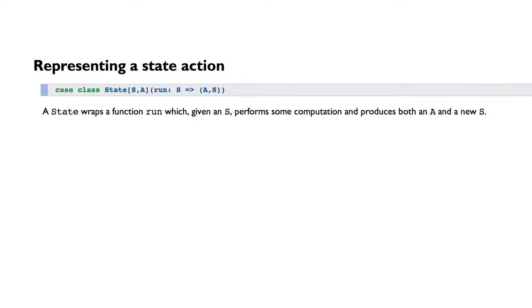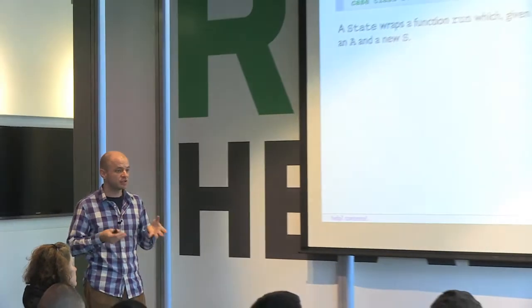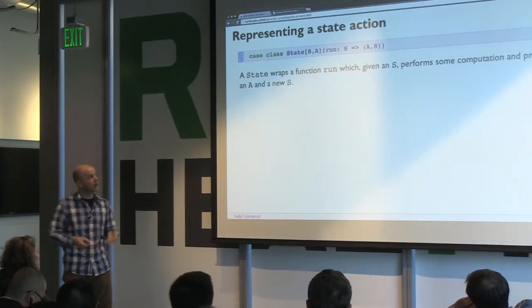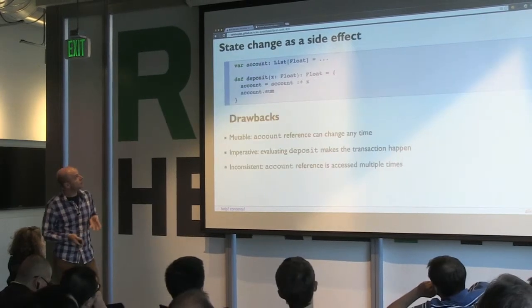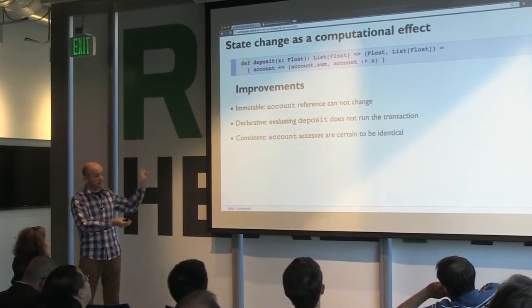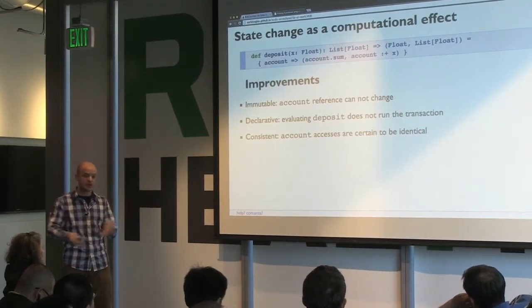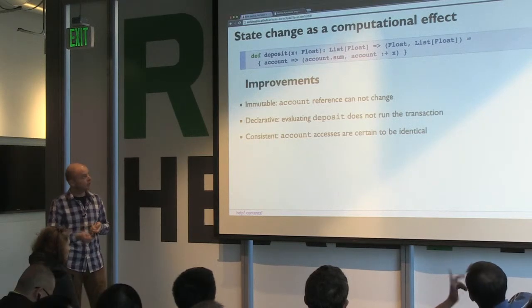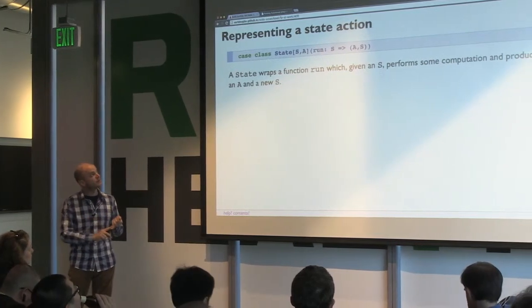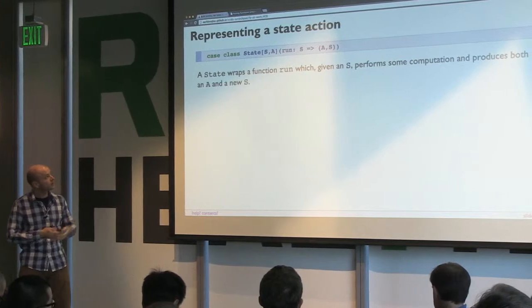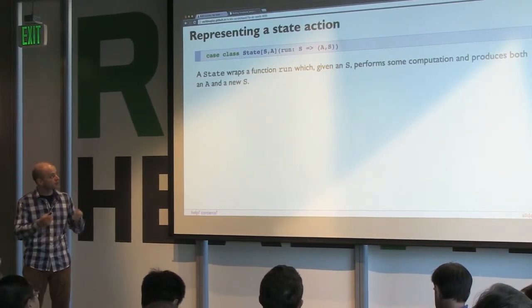I want to come up with a way to represent these stateful actions and then add some nice functions to compose them. Let's create a case class called State. State just wraps a function run — a generic function that, provided some external state, will do some computation and return a tuple containing some arbitrary value and a potentially new state. In our previous example the function takes an account (a list of floats) and returns a tuple of the balance and a new account with one transaction appended. Generalizing that: s is a list of floats and a is a float.